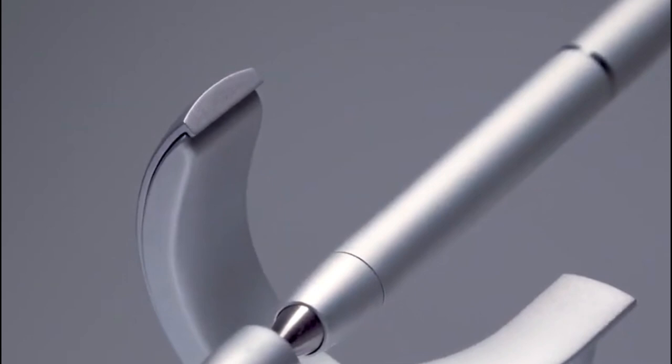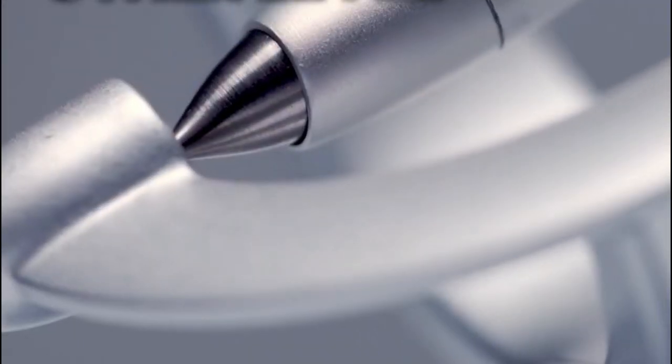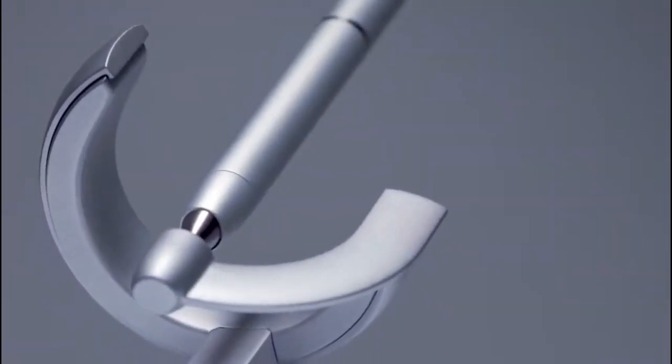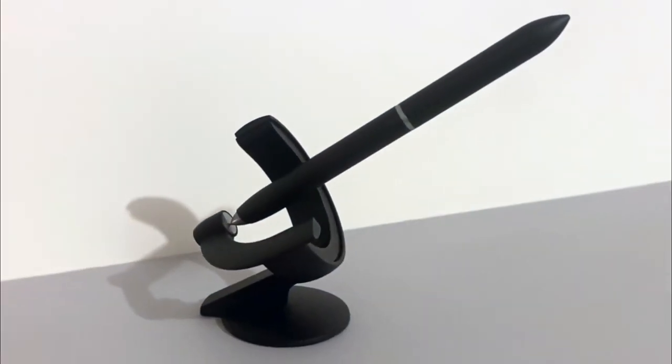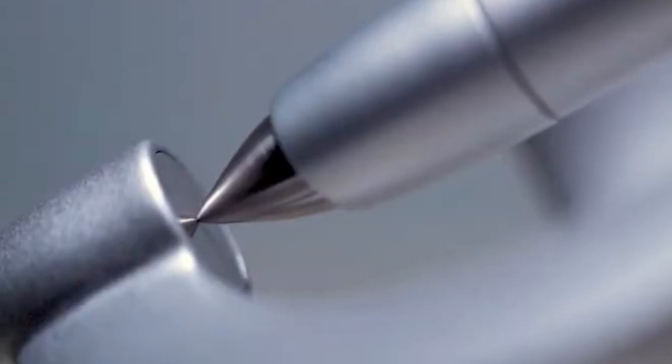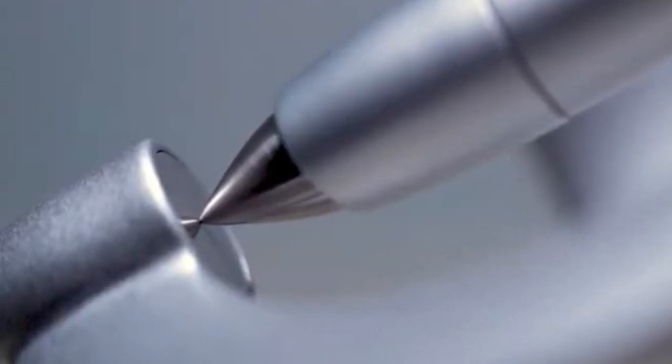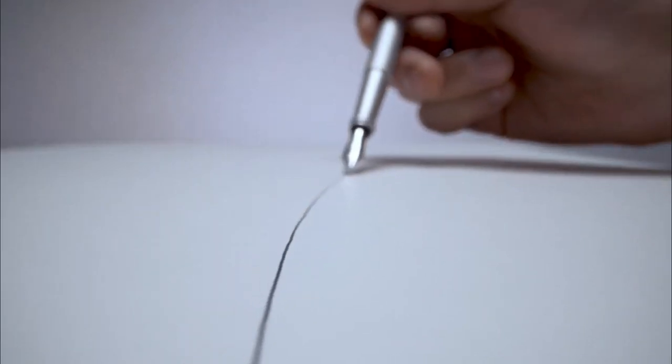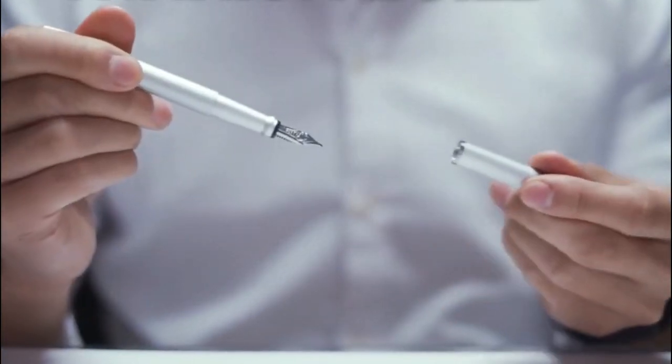Number 3. Hoverpen. This pen takes that spinning top from Inception to a whole other level. It literally defies gravity to stay upright at all times. It actually moves around like a ghost drawing circles on its own. Obviously there's no magic here as it uses super strong magnets. And it's not just a fancy showpiece. It's actually one of the sturdier pens out there, thanks to its titanium build.